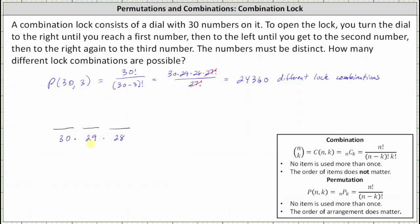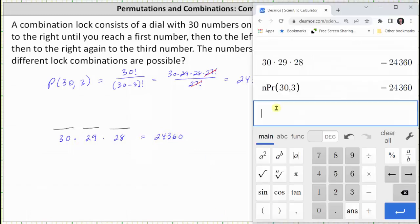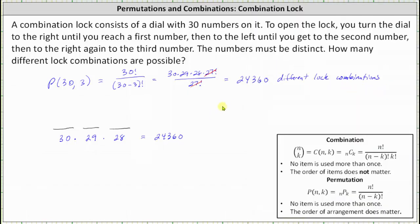Notice how this result is the same. 30 times 29 times 28 is 24,360. Let's go ahead and verify this on the calculator. Notice 30 times 29 times 28 is the same as 30 permute 3, which is 24,360. I hope you found this helpful.